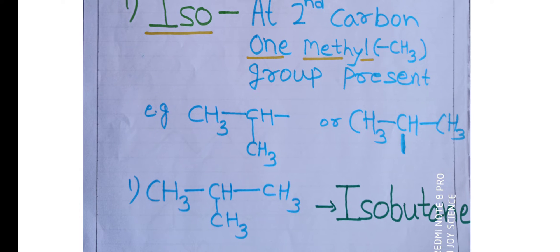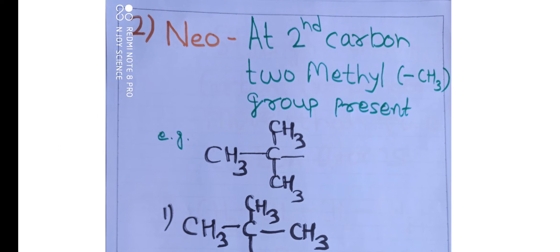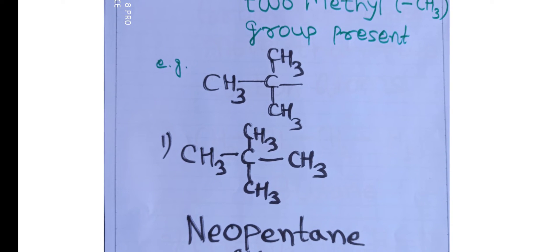For example, in this example there are total four carbons, and at the second position there is one methyl group, therefore it is 'iso'. Total carbons four, word root 'but', single bond so 'ane', and the name becomes isobutane. For neo, at the second carbon there are two methyl groups (two CH3 groups). In the first neo example, there are three carbons in the straight chain and two methyls at the second position, total five carbons, word root 'pent', suffix 'ane', therefore the name is neopentane.